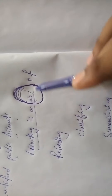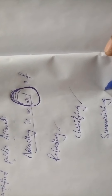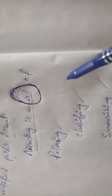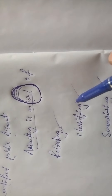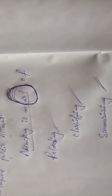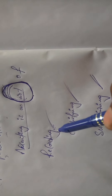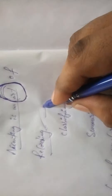The next line: accounting is an art of recording, classifying, and summarizing. These are the three steps we perform in the preparation of accounting. When you perform these tasks, that indicates we have prepared the accounts. Let's check what each step involves. The first step is recording.